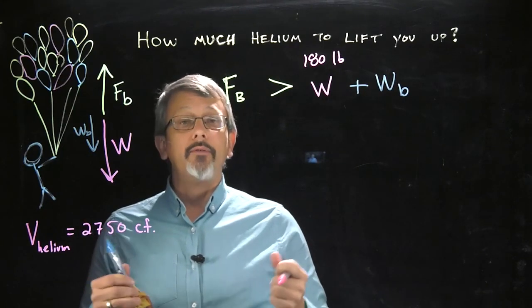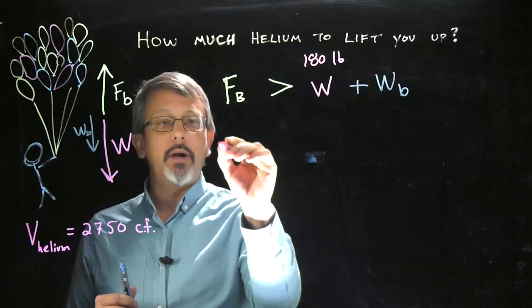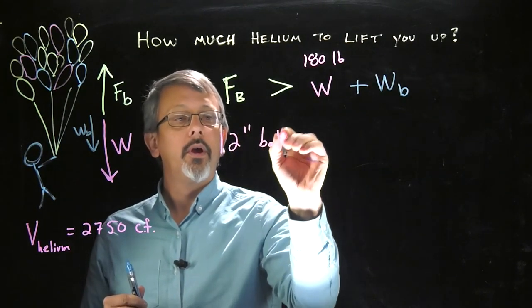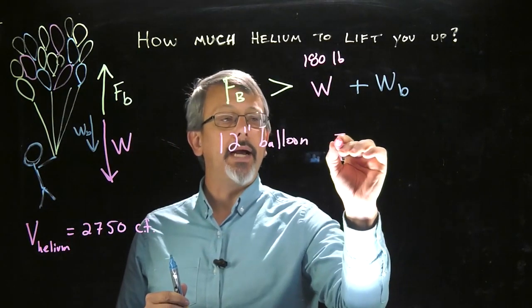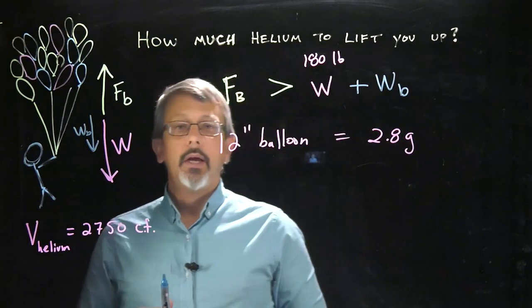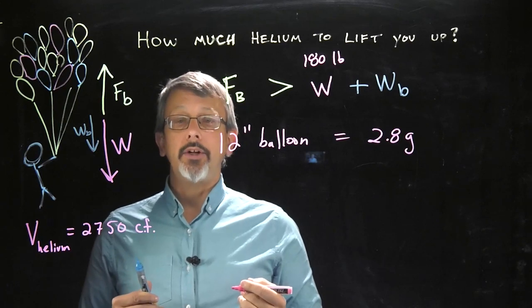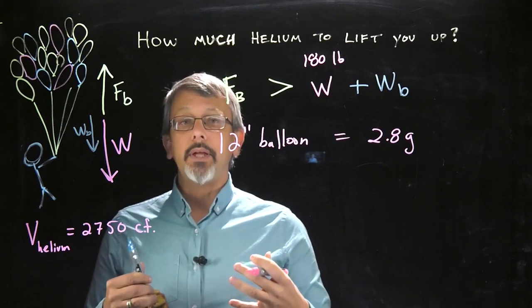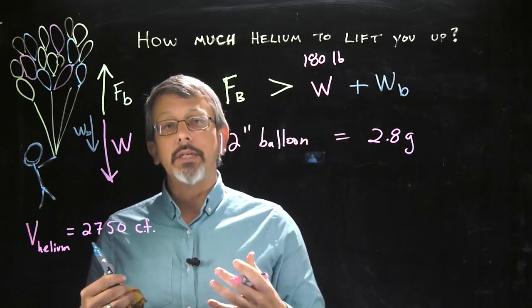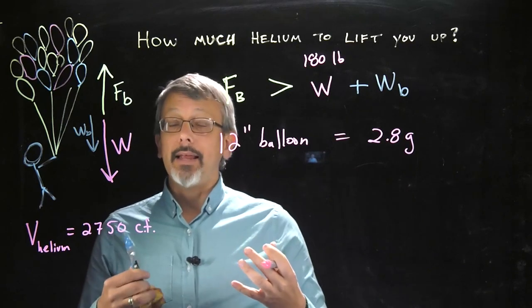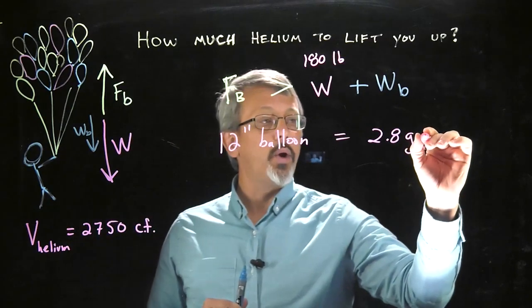So I took a standard 12-inch balloon that I bought at a party store. And with that 12-inch balloon, I did some measurements. So I have a 12-inch balloon. And that 12-inch balloon had a mass, when I measured it on my gram balance, of 2.8 grams. Now, so far we've done all of our measurements here in English units. So we should probably go ahead and continue to do that. Not only that, when we're dealing with buoyancy, typically we're dealing with specific weights as opposed to densities. So I'm going to go ahead and convert those 2.8 grams.